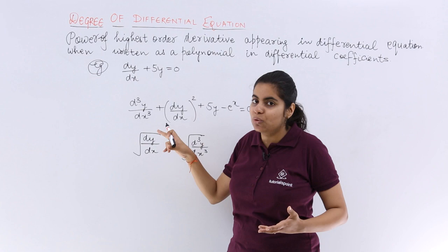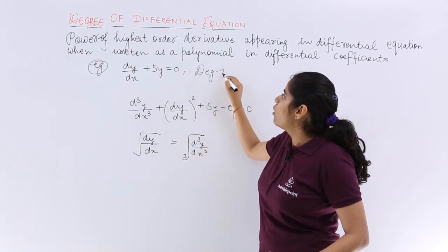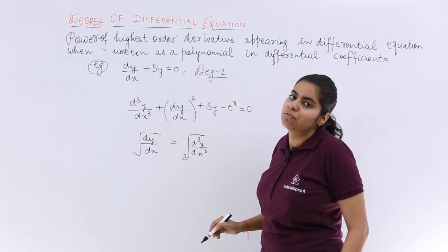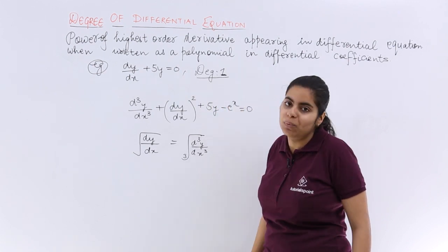The second step is power of that derivative is what? The power, there is no whole square, there is no whole cube, so power is only one. So the degree of this differential equation is 1. This is how you do it.